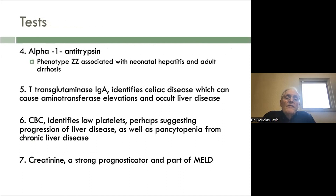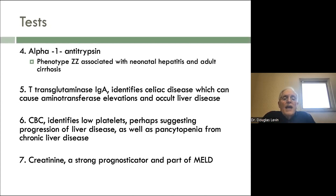Alpha-1 antitrypsin deficiency, phenotype ZZ, is associated with both neonatal hepatitis and adult cirrhosis. It's a relatively common condition and relatively easy to check — it's often made much worse by fatty liver. You can't treat alpha-1 antitrypsin deficiency other than through transplant, but if the patient is obese and you get them to slim down, this will often really slow down disease progression. TTG IgA identifies celiac disease, which can cause aminotransferase elevations and occult liver disease — something you want to check in patients with liver function abnormalities you can't explain.